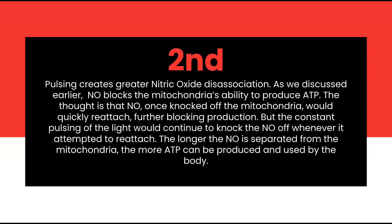Second is that pulsing creates greater nitric oxide dissociation or release. As discussed earlier about nitric oxide blocking the mitochondria's ability to produce ATP, the thought is that nitric oxide, once knocked off the mitochondria, would quickly reattach and thus further block production. But the constant pulsing of the light would continue to knock the nitric oxide off whenever it attempted to reattach. The longer the nitric oxide is separated from the mitochondria, the more ATP can be produced and used by the body.